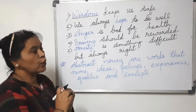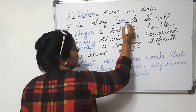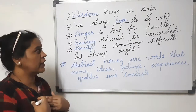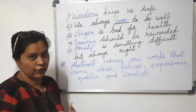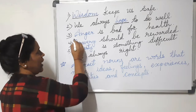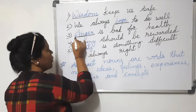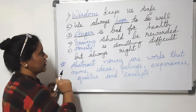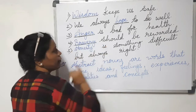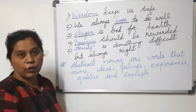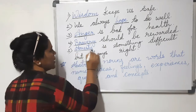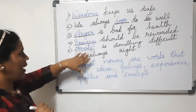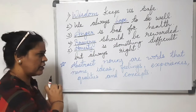Second sentence: 'We always hope to do well.' Hope is a special name and an abstract noun. Third: 'Anger is bad for health' — anger describes a quality of a person. Fourth: 'Bravery should be rewarded' — bravery is an abstract noun describing quality. Fifth: 'Honesty is something difficult but always right' — honesty is an abstract noun.